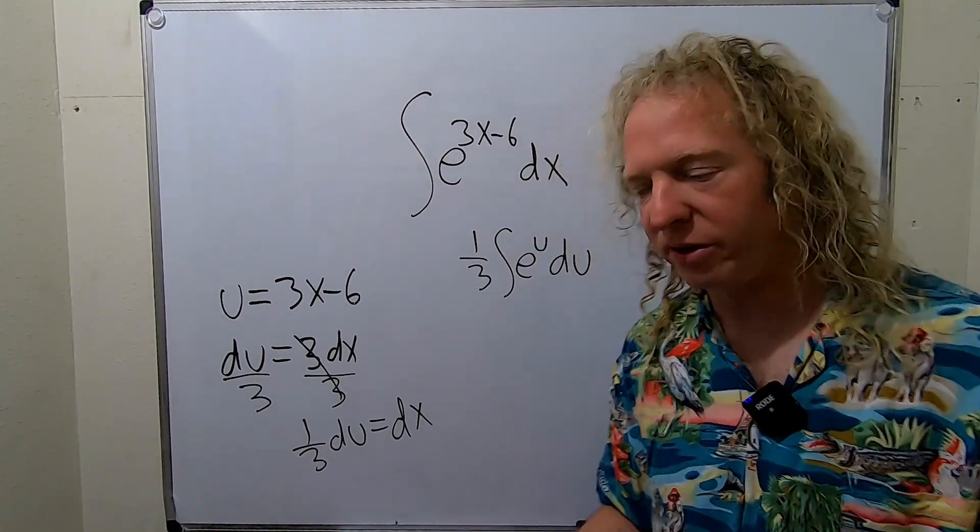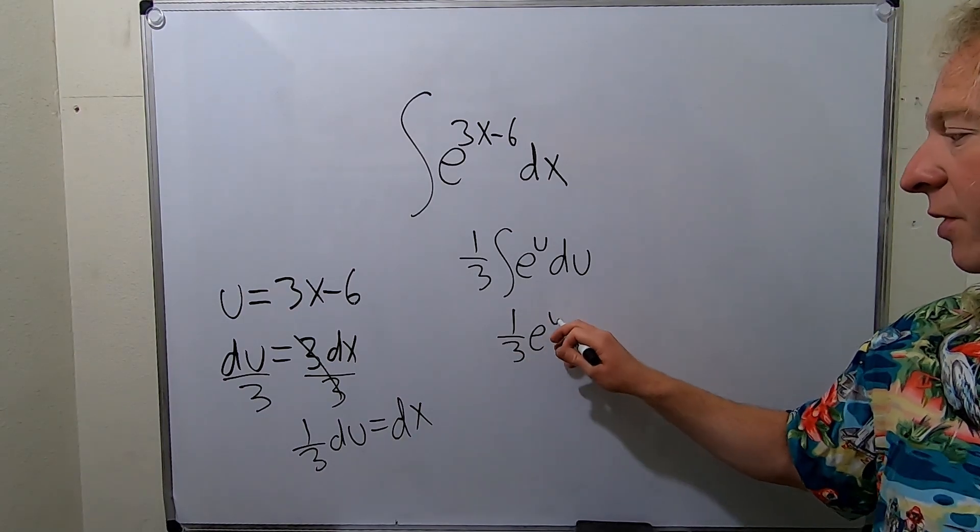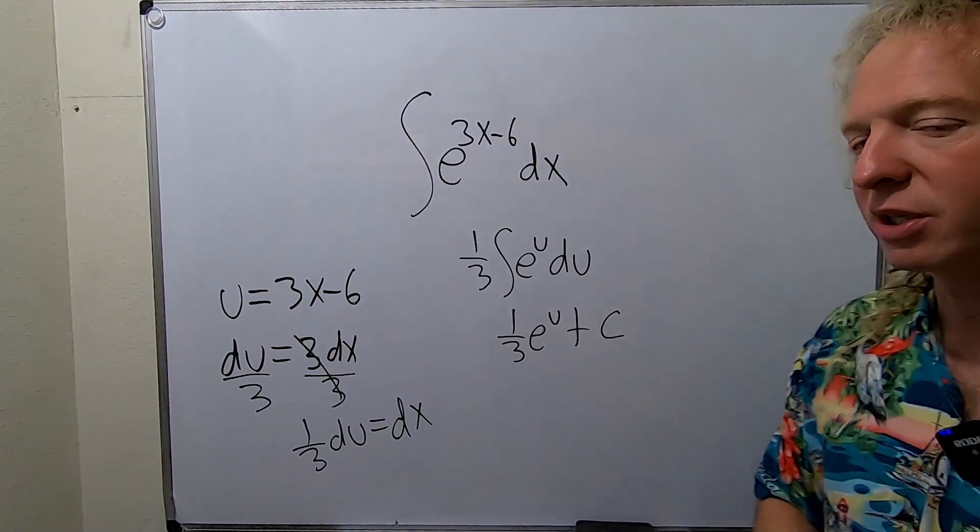The integral of e to the u is e to the u. So this is 1 third e to the u plus our constant of integration, capital C.